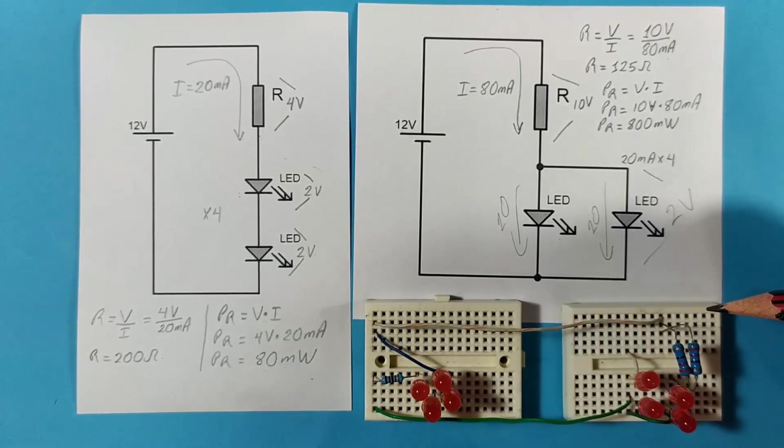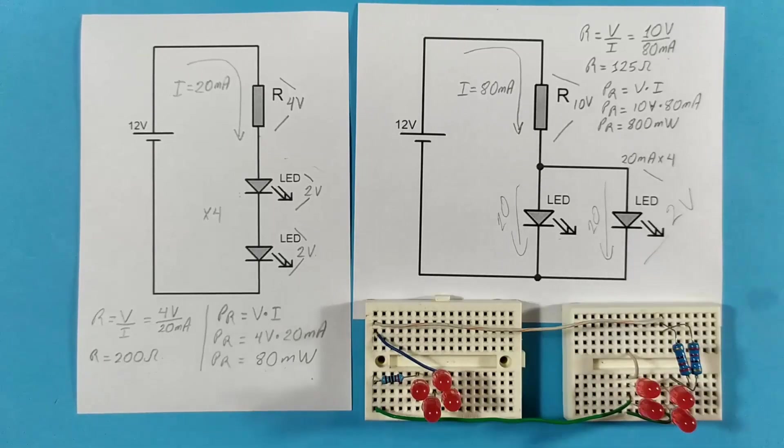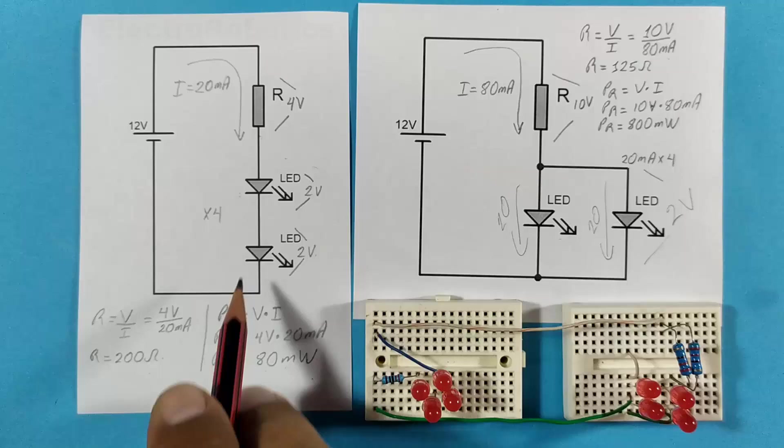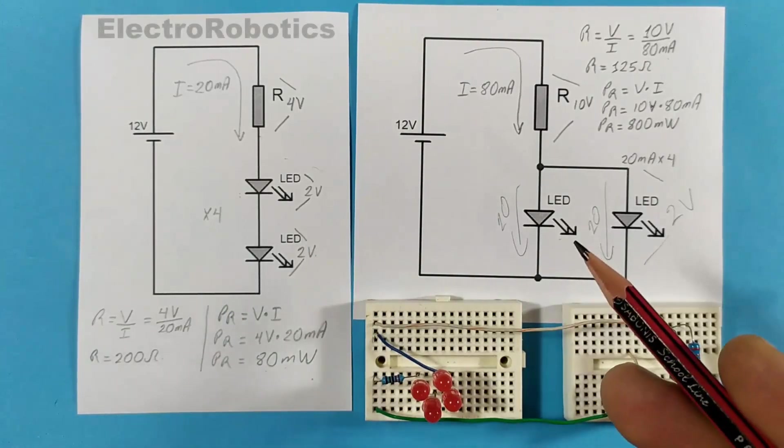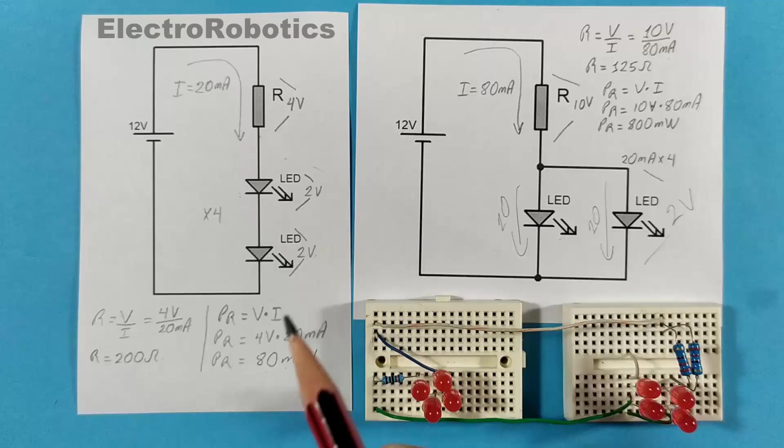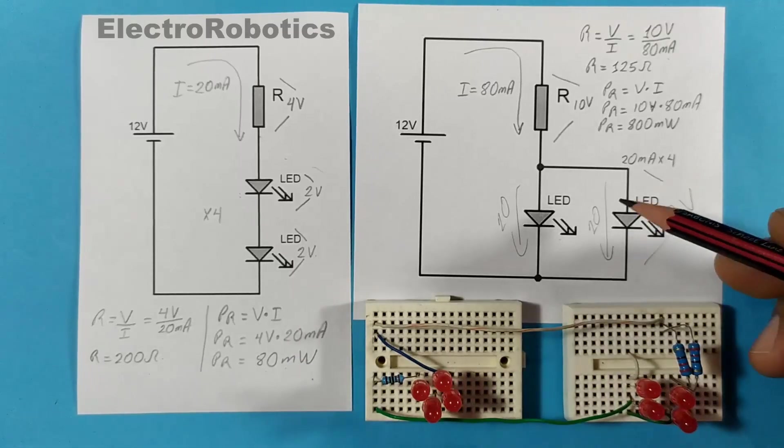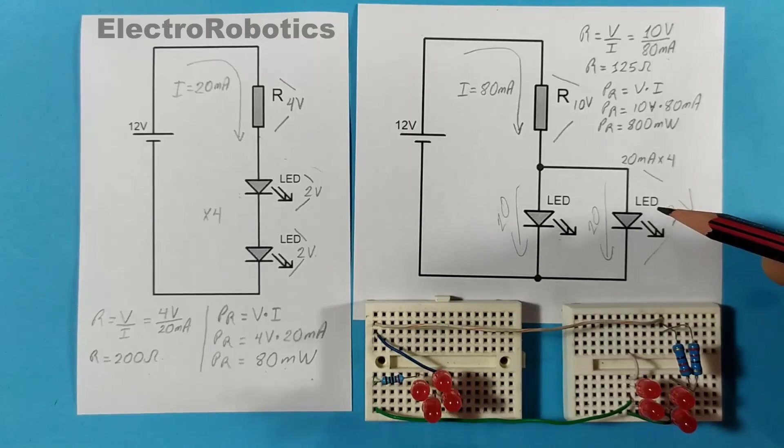This will only work if the LEDs are the same color. In the case of the series circuit, the color of the LEDs does not matter. They will work anyway, there will be no problem. In this case, they have to be the same color, otherwise each LED must have its own resistance.